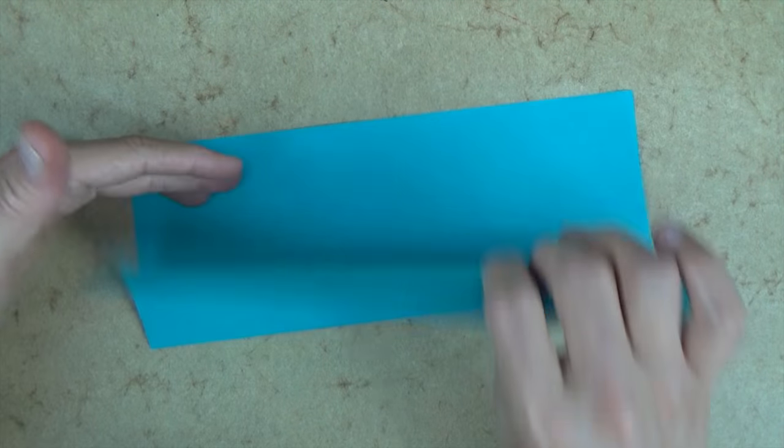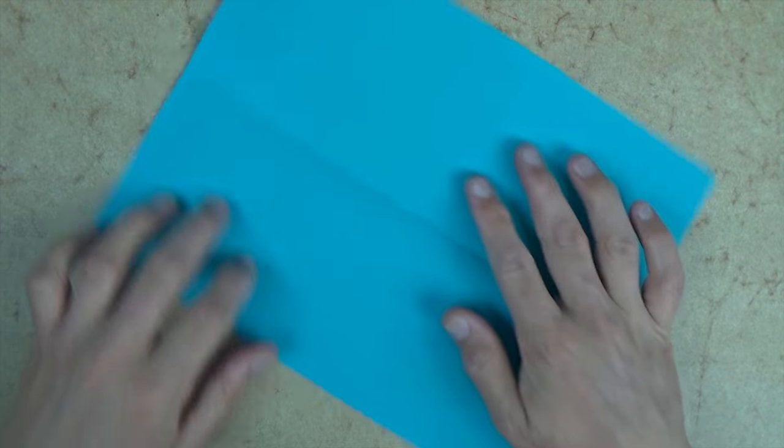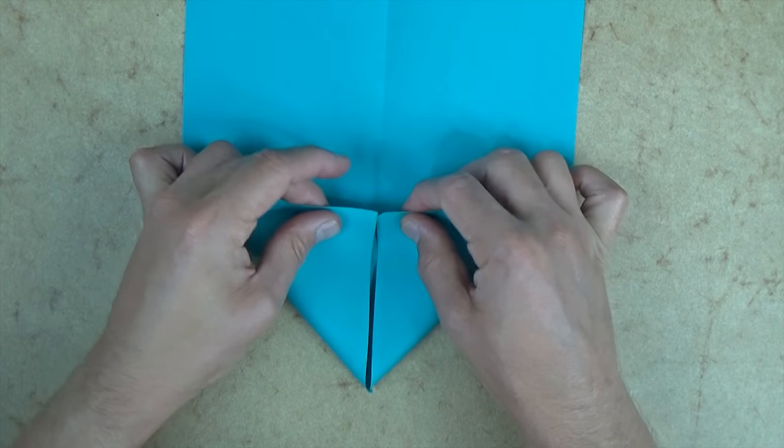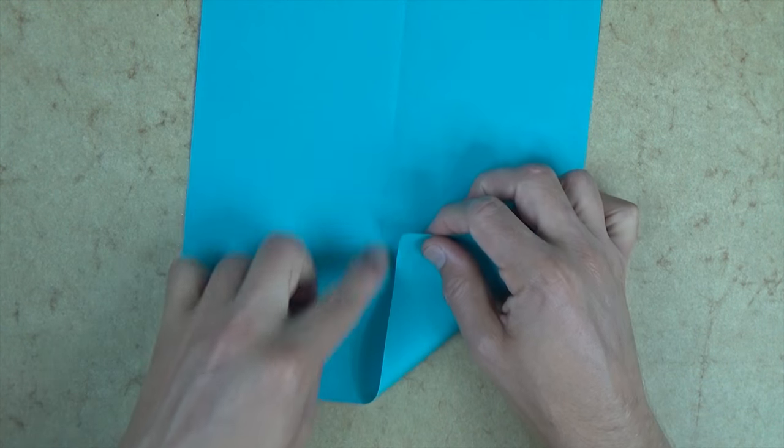And now let's unfold, and let's rotate, and let's do a paper airplane fold. So we're folding these corners to the crease.